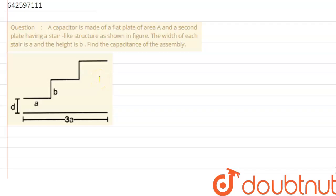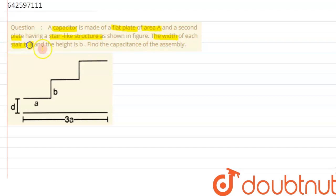Hi everyone. We are given a question which says: a capacitor is made of a flat plate having area A and a second plate having a stair-like structure as shown in the figure. The width of each stair is given as small a and the height is given as small b. We need to find the capacitance of the assembly.